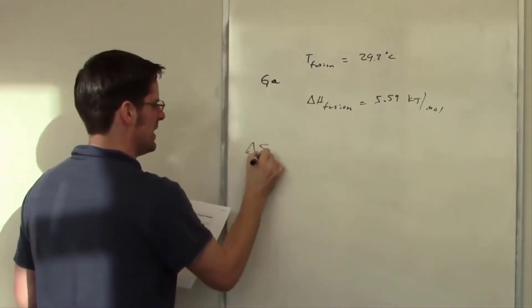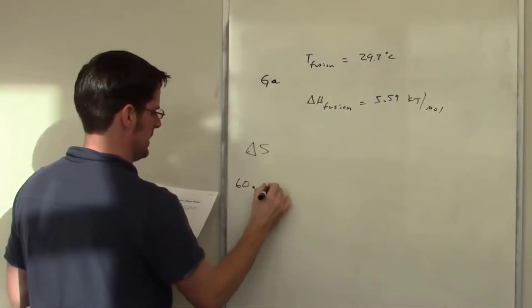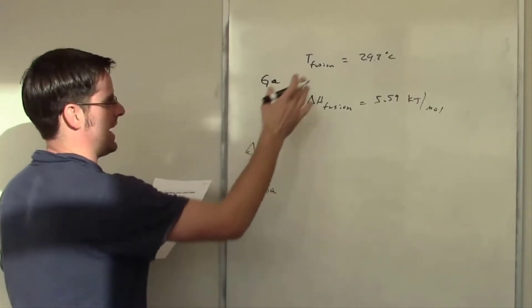It then asks what the value of delta S is when we have 60 grams of gallium solidifying at that temperature.